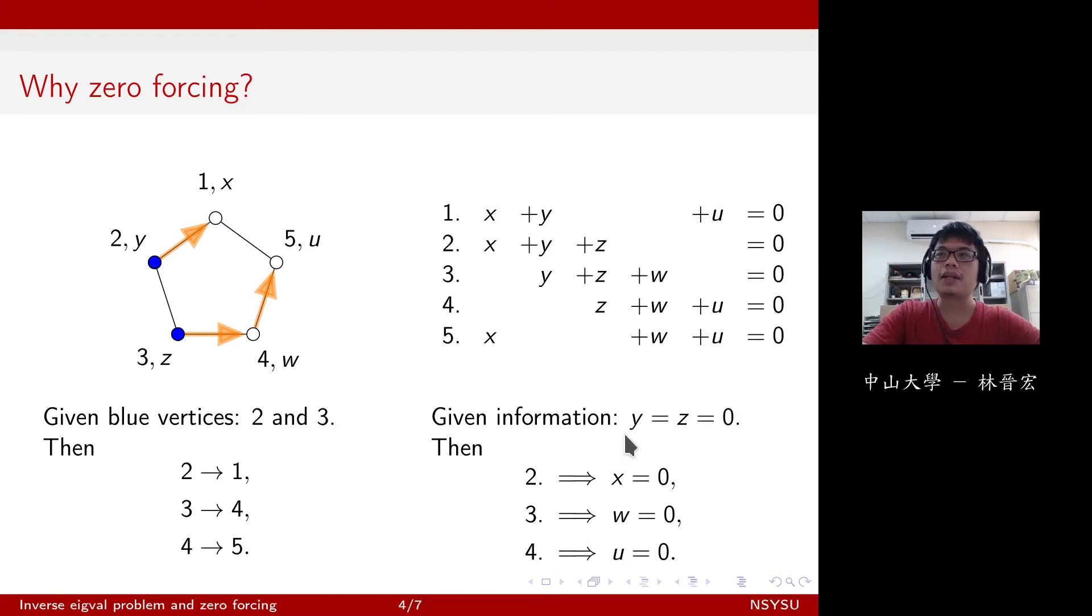If you look at this equation, and provided that the information says that y, z is equal to 0, then you can sequentially make x equal to 0 and w and u equal to 0. So zero forcing process is just a process of spreading more and more zeros.